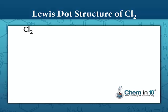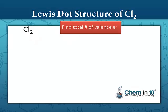To draw the Lewis dot structure of chlorine, we first determine how many valence electrons we have. Since we have two chlorine atoms and each chlorine atom has seven valence electrons, that's a total of 14 valence electrons.